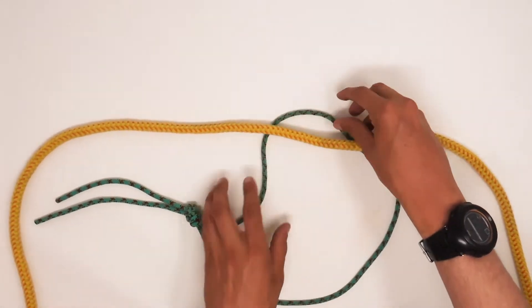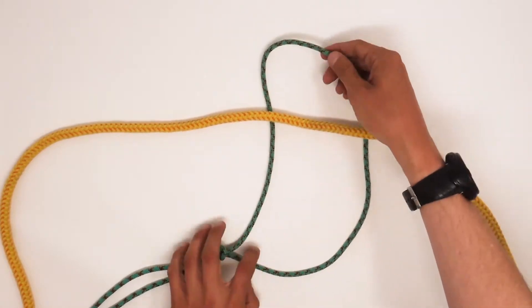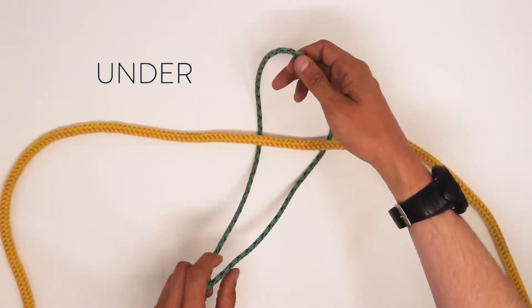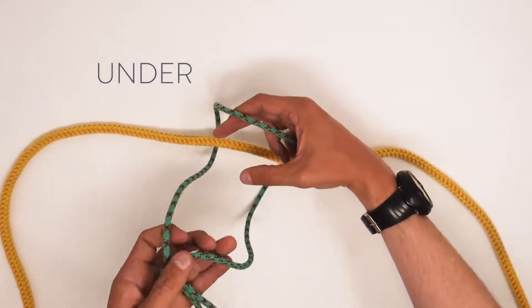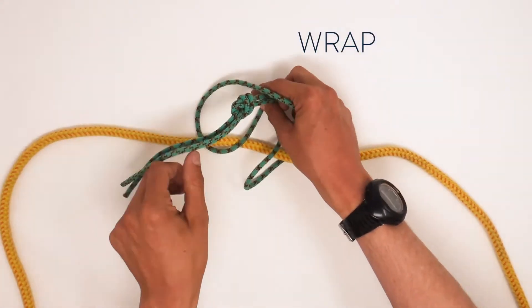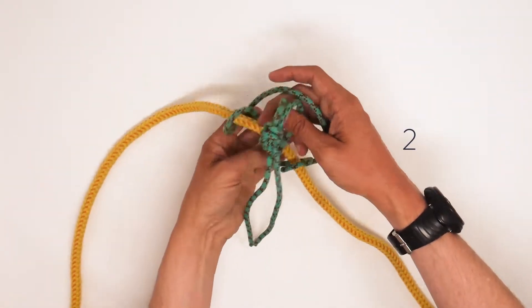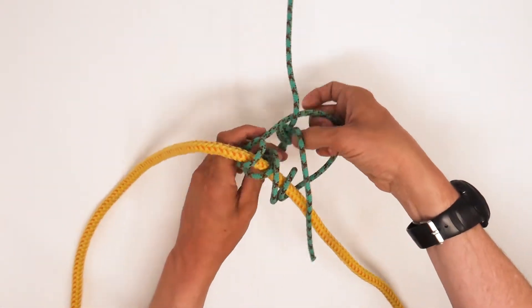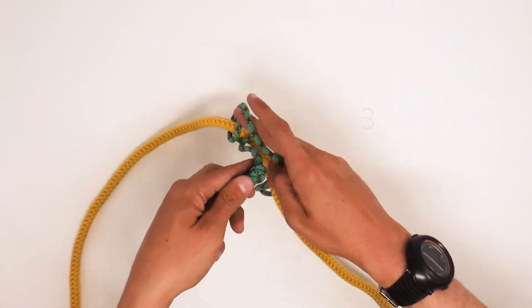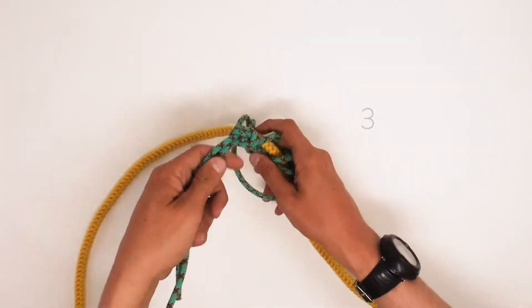We start off by putting our Prusik cord underneath the rope that we're tying to. Then we wrap around one, two, and three times, and then pull through.